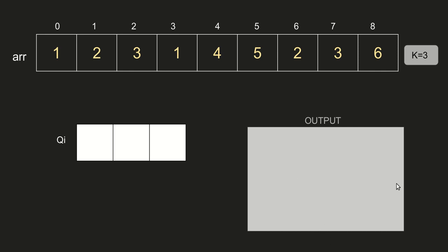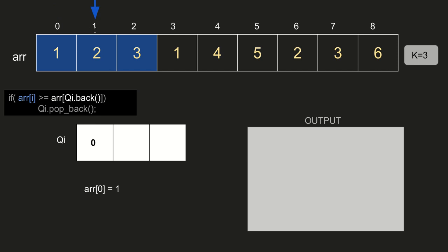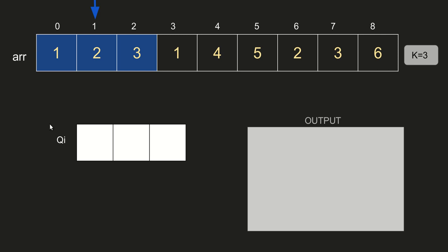We start with the first subarray. We directly insert the first element's index (0) into the deque. Moving to the next element (index 1, value 2): since array[1]=2 is greater than or equal to array[deque.back()]=array[0]=1, we pop index 0 from the back and insert index 1. Moving to the next element (index 2, value 3): since 3 is greater than or equal to array[1]=2, we pop index 1 and insert index 2.